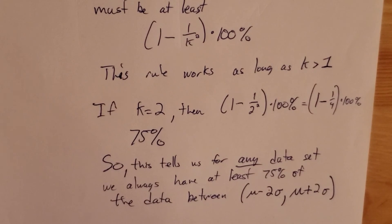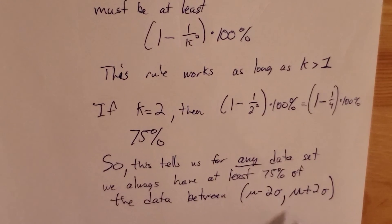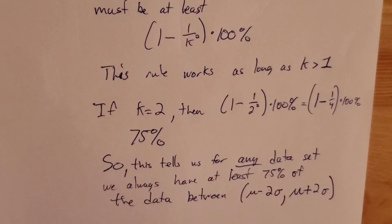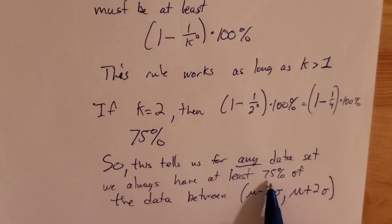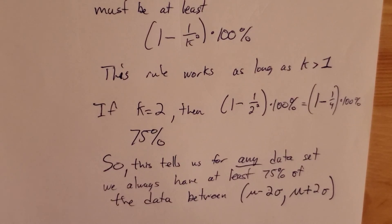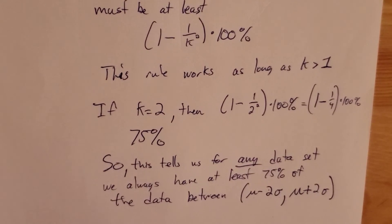Recall the empirical rule stated that 95 percent of the data will lie in this interval for normally distributed data. Well, 95 percent is greater than 75 percent, so this rule still holds. All Chebyshev's theorem says is that at least 75 percent of the data is there — but for any data set, no matter how it is distributed, at least 75 percent will be within this interval. And that will conclude this video.